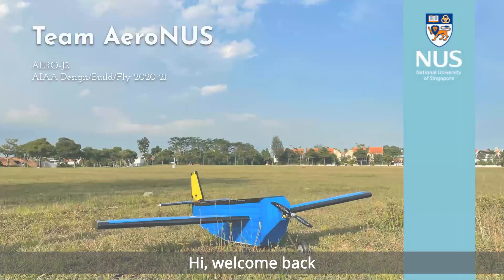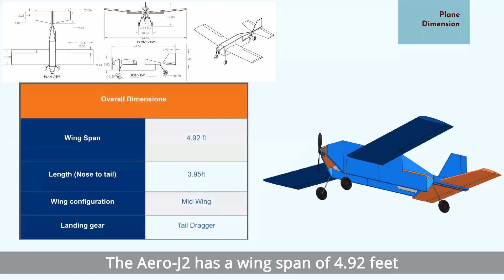Hi, welcome back. The Arrow J2 has a wingspan of 4.92 feet and a length of 3.95 feet. The aircraft has a mid-wing design and employs a tail-dragger configuration for its landing gear.